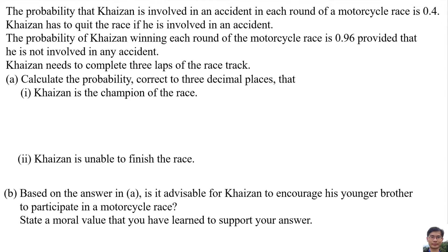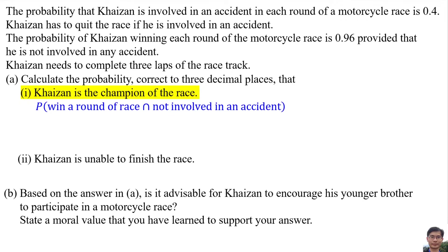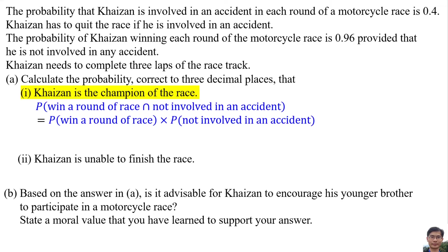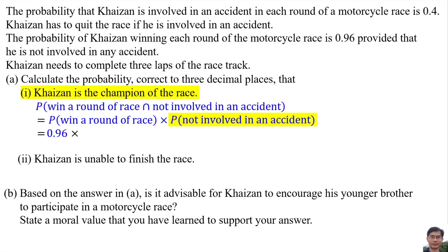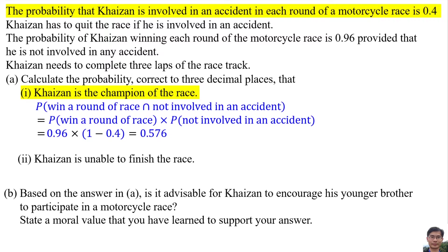Calculate the probability, correct to 3 decimal places, that Kaizan is the champion of the race. The probability of winning a round of race and not being involved in an accident is the probability of winning a round multiplied by the probability of not being involved in an accident. The probability of winning a round is 0.96, and the probability of not being involved in an accident is 1 minus 0.4, which equals 0.6. So the probability of winning a round and not being involved in an accident is 0.576.